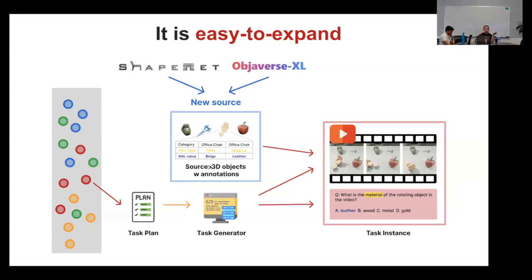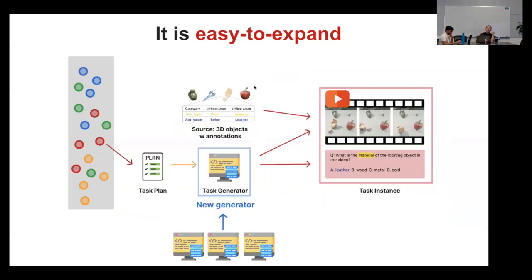The Task Me Anything task space is very easy to expand. Right now we only use several hundred objects with ground truth annotations, but we can add more 3D objects from ShapeNet or ObjectVerse XL. With only several hundred annotated 3D objects we already generate 700 million tasks. If we further expand the object set, the space grows exponentially because it's a combinatorial space. We can also expand by adding a new task generator — users can implement their own generators using existing ingredients to test new model capabilities.